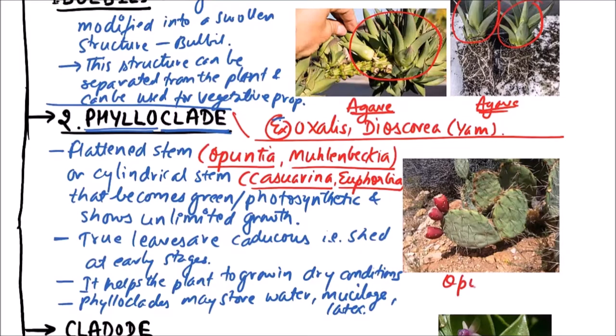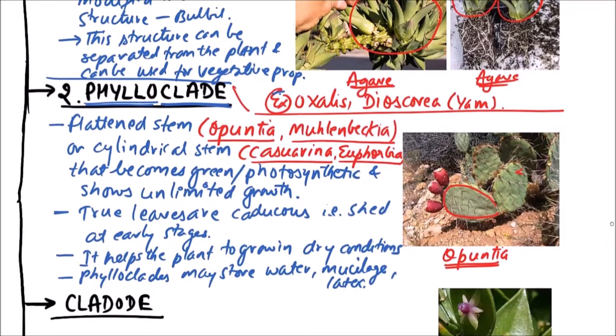This is an example of Opuntia. The stem is flattened and leaves are reduced to spines. So this is phylloclade.